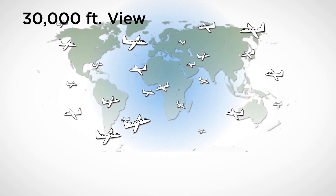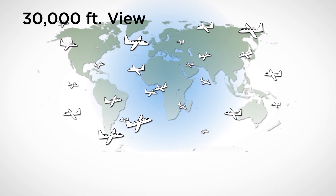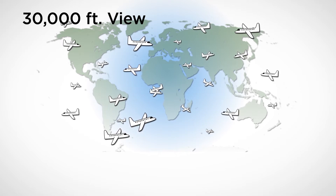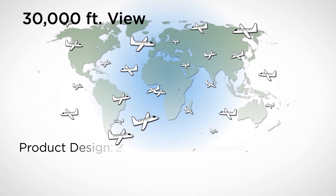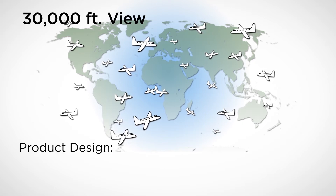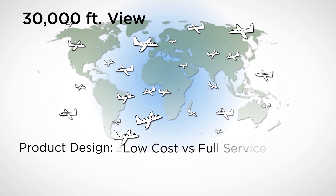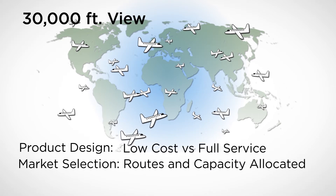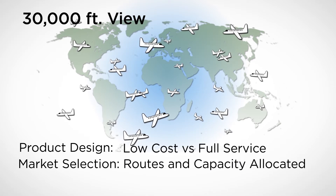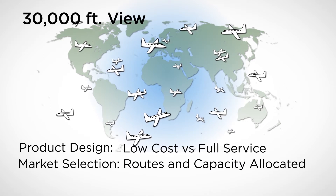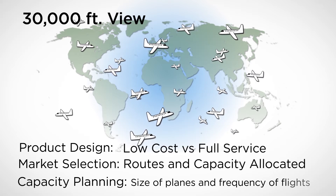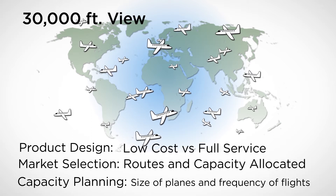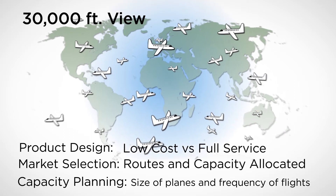In this tutorial, I'm going to be using the airline industry as a running example. This 30,000-foot view of the problem of matching supply and demand involves issues about product design — whether you want to be a low-cost carrier or a full-service airline — market selection in terms of which routes you're competing on, how much capacity you allocate, and long-term capacity planning in the form of plane size and flight frequency on those routes.